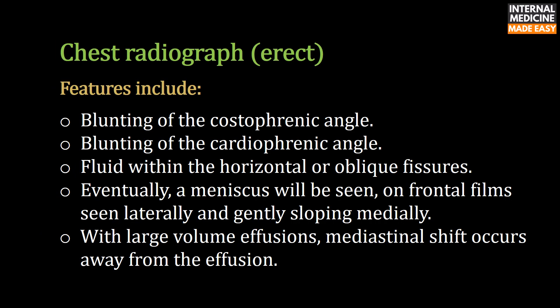Features on an erect chest radiograph include blunting of the costophrenic angle, blunting of the cardiophrenic angle, and fluid within the horizontal or oblique fissures. Eventually a meniscus will be seen, on frontal films appearing laterally and gently sloping medially. With large volume effusions, mediastinal shift occurs away from the effusion.